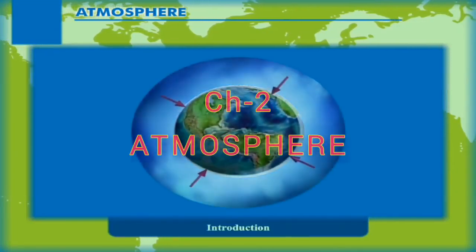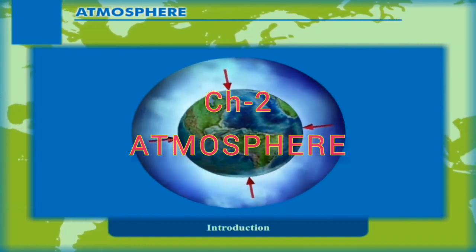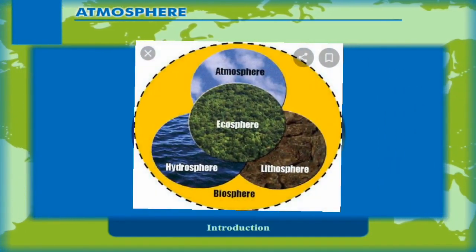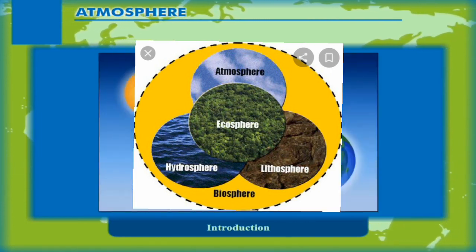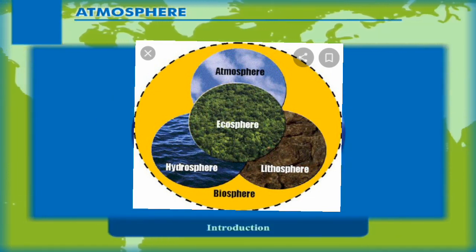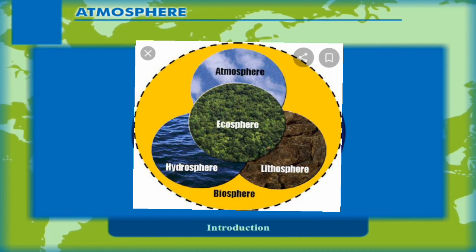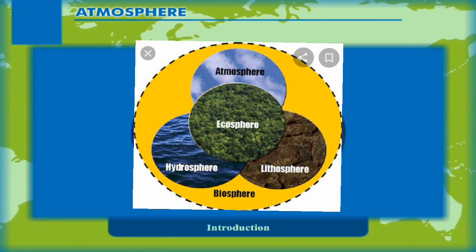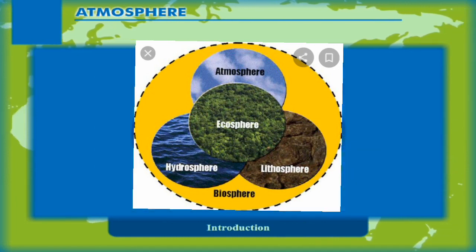Hello students, today I am going to start Chapter 2: Atmosphere. In this chapter, first of all we will understand how many realms of the earth there are. There are 4 realms of the earth: Number 1, lithosphere, which comprises the solid portion of the earth; Number 2, hydrosphere, which comprises all water bodies on the earth; Number 3, atmosphere, which comprises the blanket of air around earth; and Number 4, biosphere, which comprises the living world.